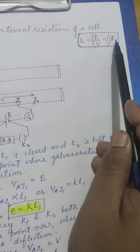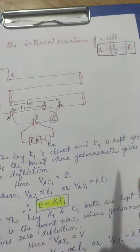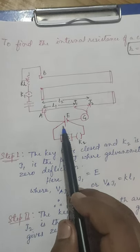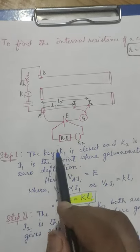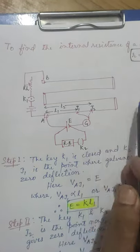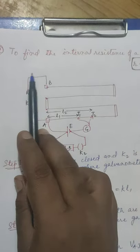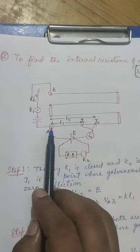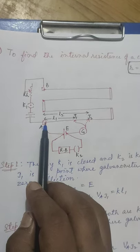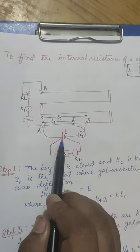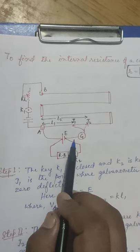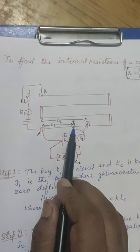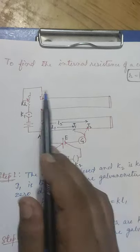This formula was derived earlier when we were studying internal resistance — you can check that part to see how it was obtained. Now, the cell whose internal resistance is to be measured is connected to the potentiometer. Two points A and B are there. B is connected to the rheostat, then through a key to the positive terminal of the driving battery, which is connected to point A. The positive terminal of the cell under test is also connected to point A, and its negative terminal is connected to the galvanometer, which in turn is connected to the jockey. The jockey can make contact with any point on the potentiometer wire from A to B.